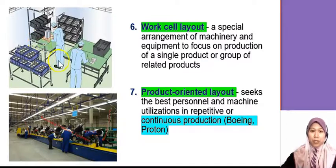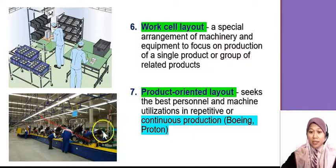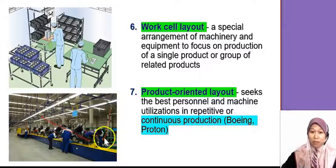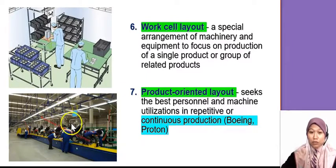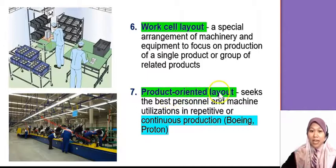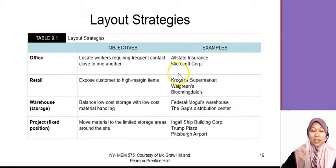And then we have product-oriented layout. This is the typical assembly line for automotive. And sometimes for discrete products such as minuman dalam botol, all the tins, canned food — they're using this kind of line. We call it product-oriented layout. These are the examples; these are the strategies.